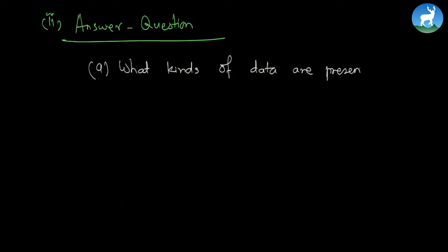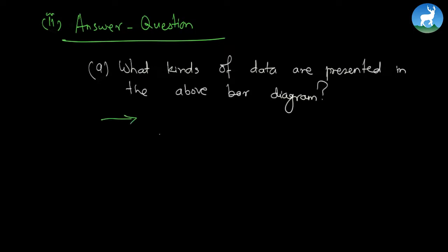With this we come to the last portion of the exercise: answer the following questions. The first question is: what kinds of data are presented in the above bar diagram? If you look at the bar diagram you generally find there are two different kinds of data — they are year and the number of students, number of boys and number of girls.